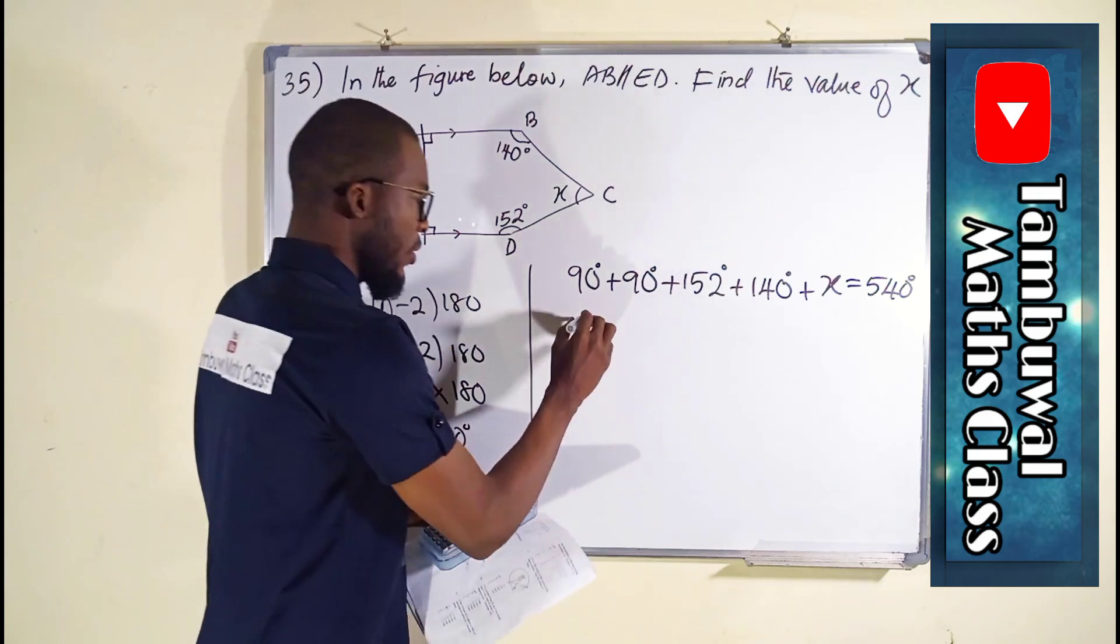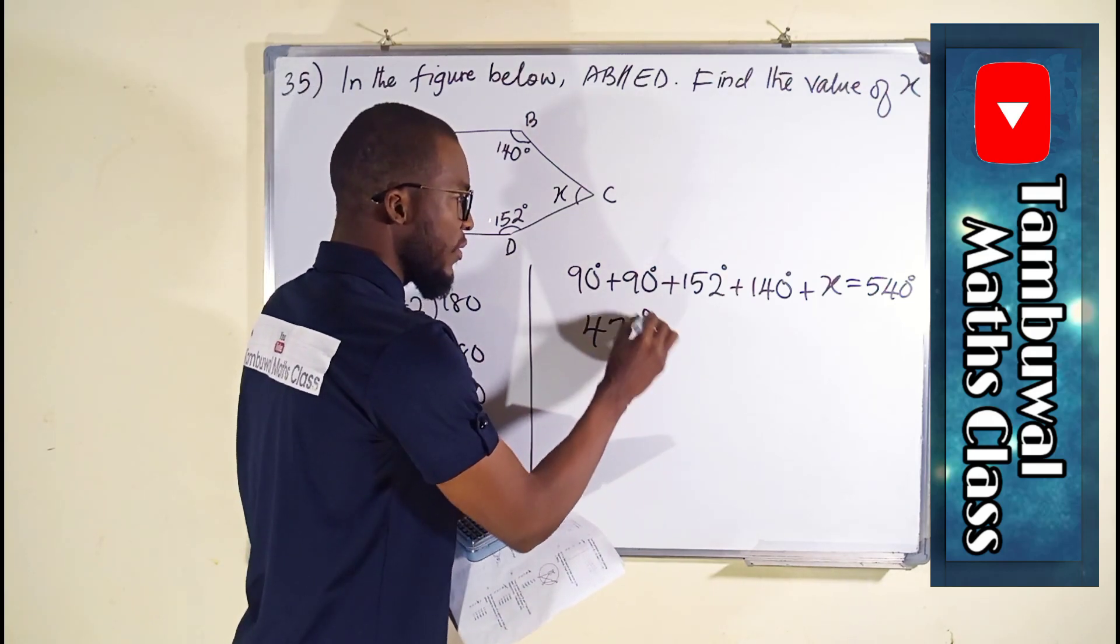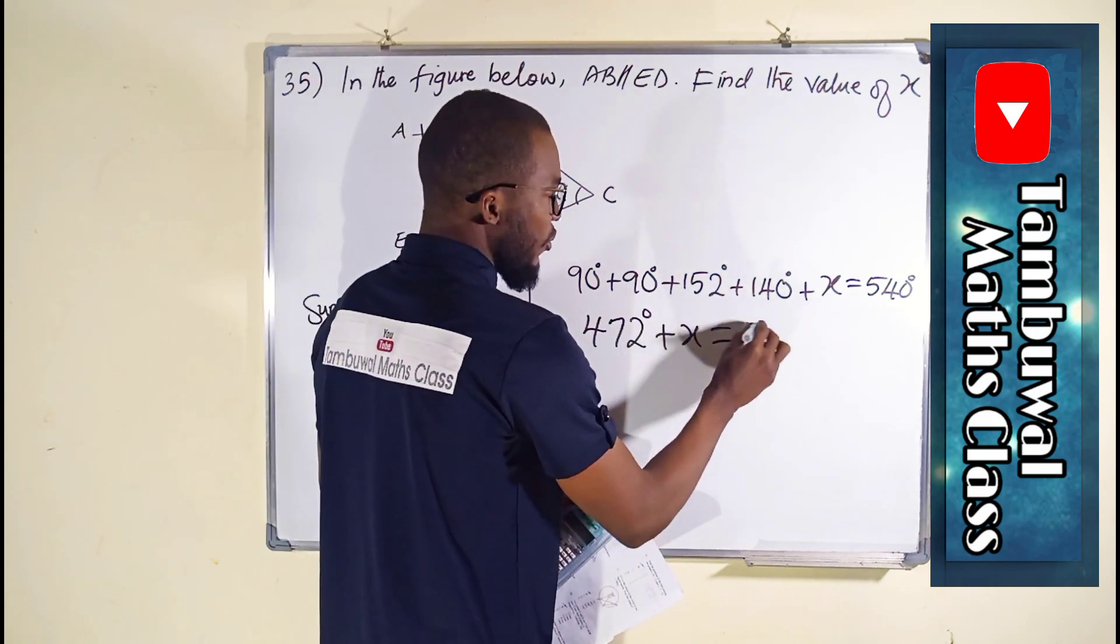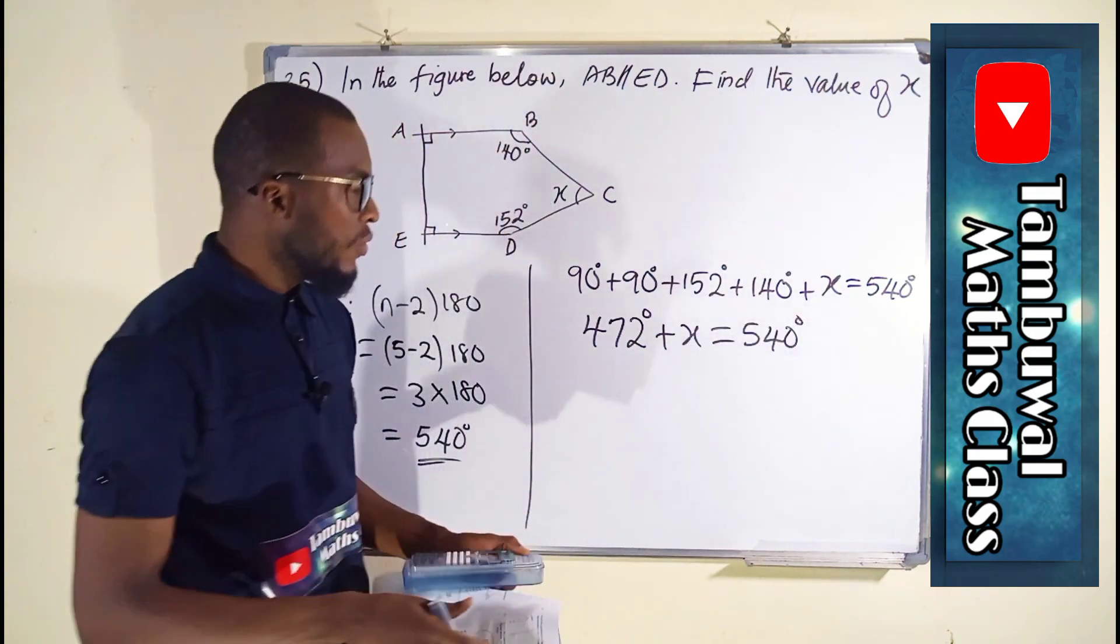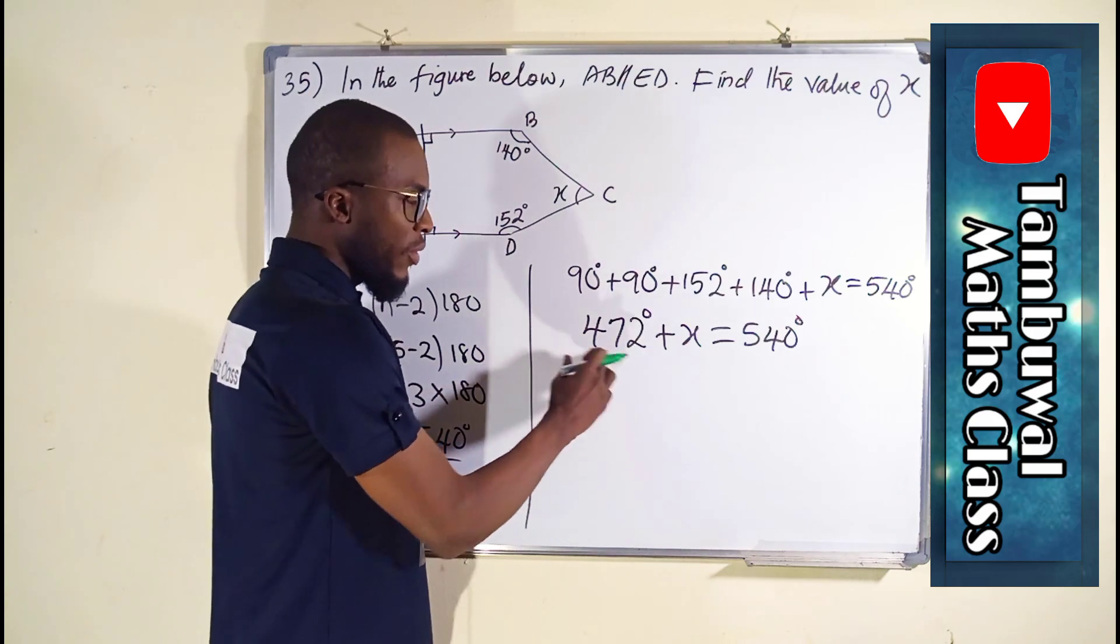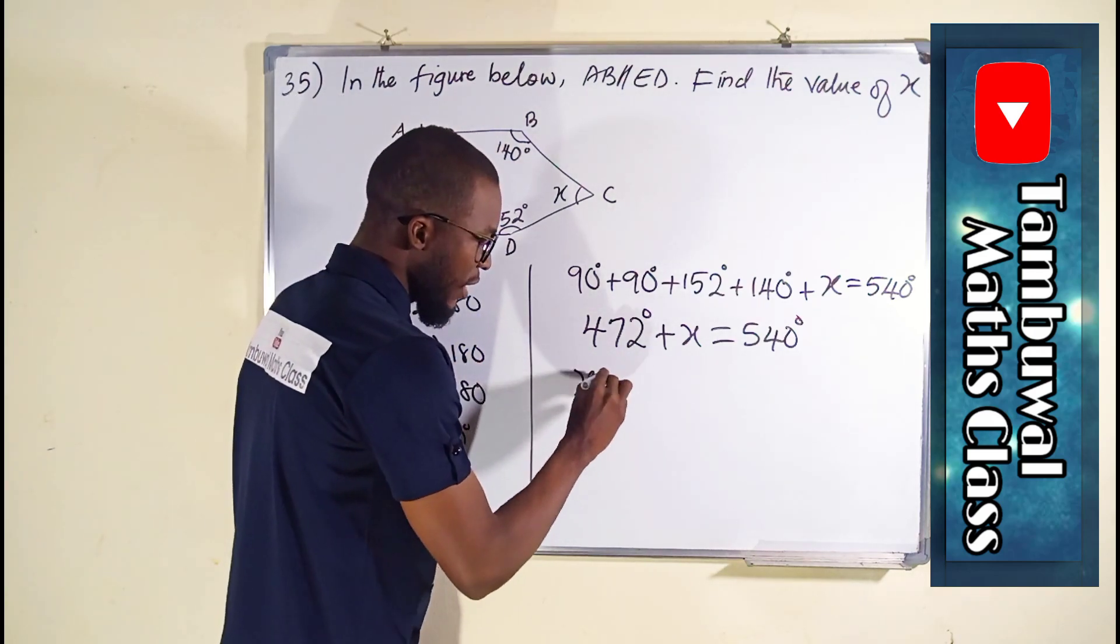Collectively we have 472 degrees plus X equal to 540. Because we are looking for the value of X, we can now subtract 472 from both sides, leaving only X here.